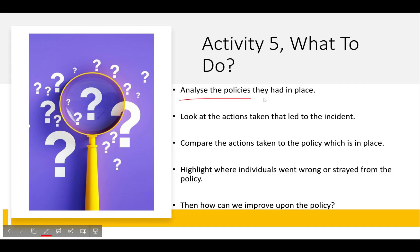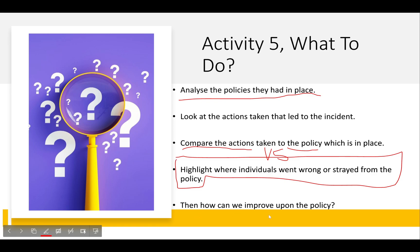For Activity Five, you need to: analyze the policies the company had in place, look at the actions taken that led to the incident, compare those actions to the policy — so did the actions taken align with the policy? For example, the policy might say 'do this thing if this thing happens' — did they actually do that? Highlight where individuals went wrong or strayed from the policy, then discuss how we can improve the policy and what we tell people to do going forward.